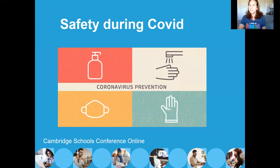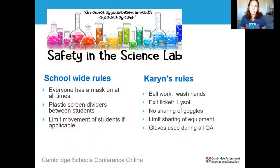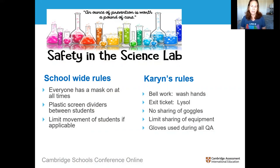The first thing we had to figure out was how to hold face-to-face classes safely. The county came up with a set of county-wide rules: everyone had to have a mask on at all times from the moment you enter campus to the time you leave. The only time it could come off was during lunch when students were socially distanced. The county also purchased large plastic screen dividers to place between students because there was no way to get students six feet apart — you can't change the size of the building. We were also to limit student movement wherever possible.